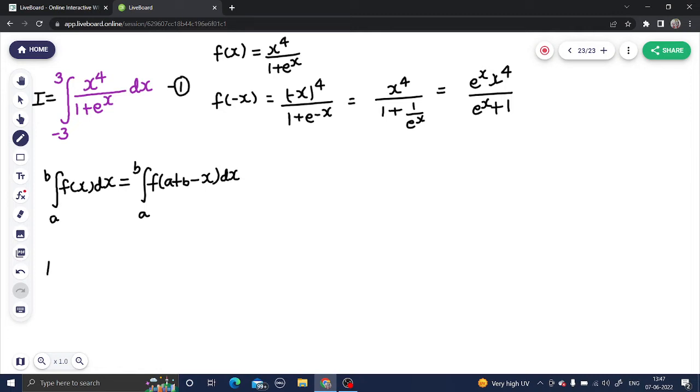Now, I can also write i as integral minus 3 to 3. A plus b will be 0, so I will replace x in this question as 0 minus x, that is simply minus x. If I do so, it will be converted to minus x power 4, 1 plus e power minus x. If I simplify it which I have done here, I will get this expression.